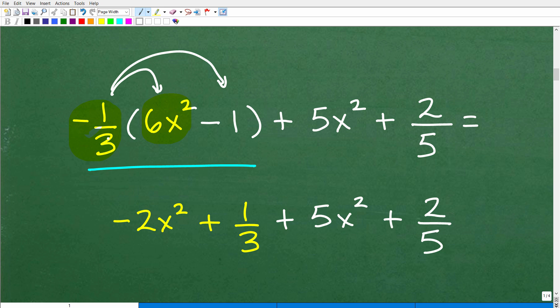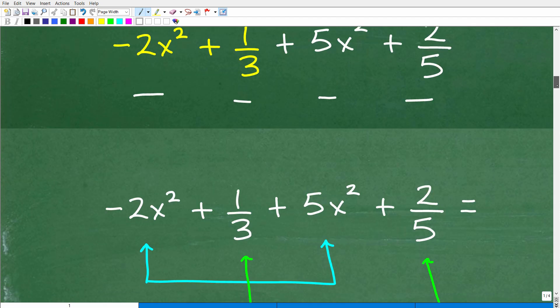Now, instead of having this number outside these parentheses, I have four terms I can try to combine. So the next step is going to be combining like terms.